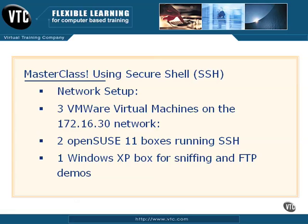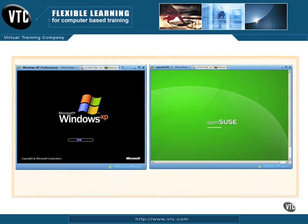We'll use the Windows XP box for various things, including sniffing the wire for unsecured traffic, some FTP demos, and some other things. So basically we've got two Linux boxes and a Windows box — great boxes to test Secure Shell out on and set up a small basic lab. We tell you how the network is set up so you can do some of these demonstrations on your own and actually do these things hands-on to see better how Secure Shell works.